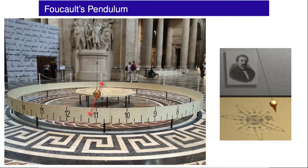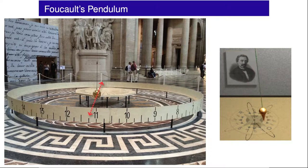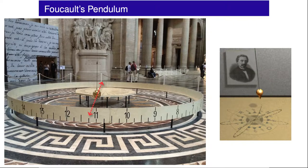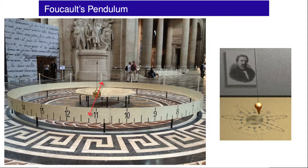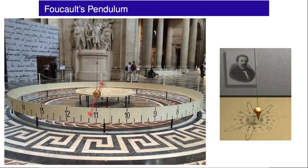The pendulum appears to precess with an angular velocity that depends on its latitude, so that over the course of a day the pendulum will make a complete revolution if it is at the north or south pole, or make some fraction of a revolution that depends on the sine of the local latitude.